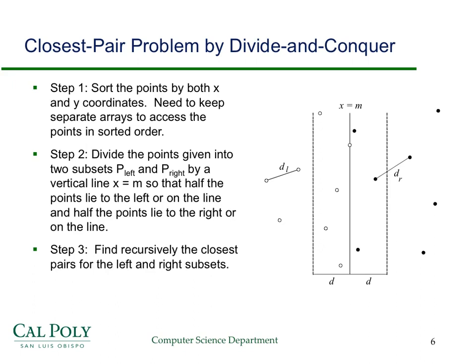Here's the idea. Let's sort the points by both x and y coordinates. For now, we're just going to worry about the x coordinates. So you get a picture like this with the x axis down here. You divide the points into two equal subsets by finding the median point. That's easy to do since you've got them sorted by x coordinates. This is the dividing line, x equal to the median.